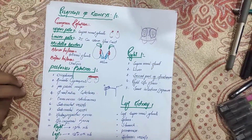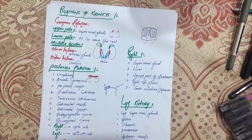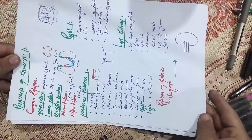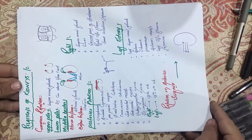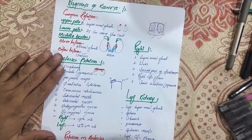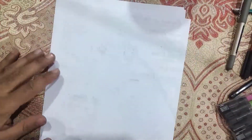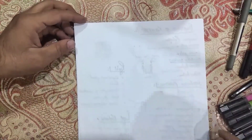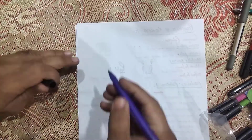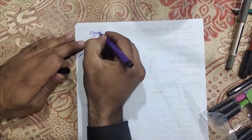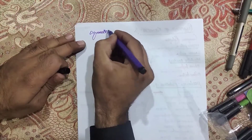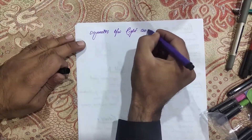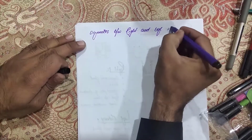Hello, dear friends. Assalamu Alaikum and welcome back. These are the lectures about the anatomy of the human urinary system. The previous lecture was about the organs and the relations of the kidneys on both sides. In this lecture, I am going to discuss the differences between the right and left kidneys, as these kinds of questions are sometimes asked.